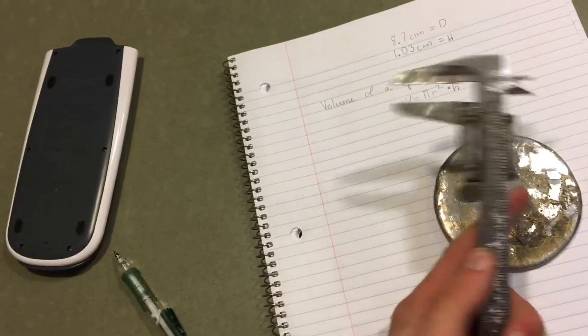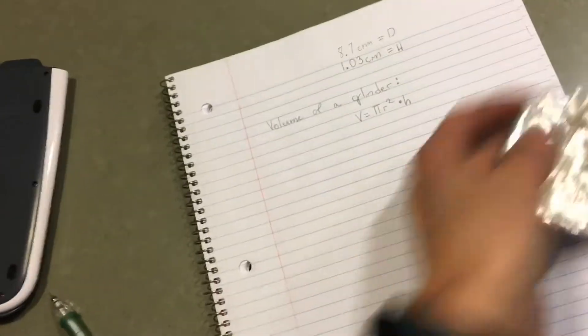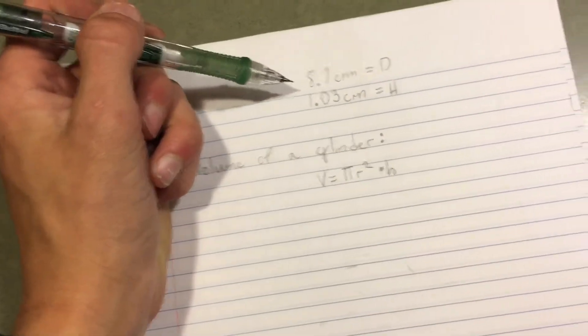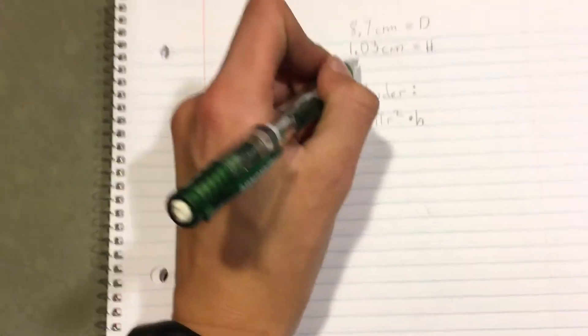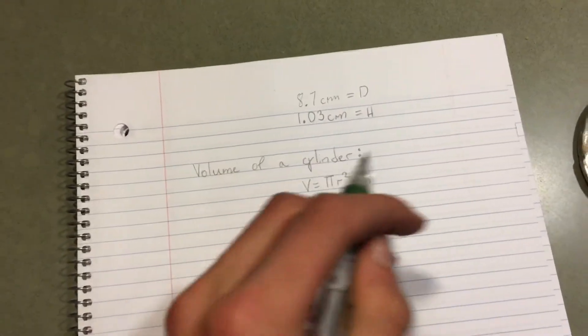Well, I do have a caliper, so I took some measurements. Average diameter is 8.7 centimeters and the average height is 1.03 centimeters.